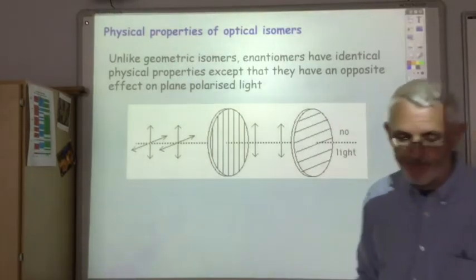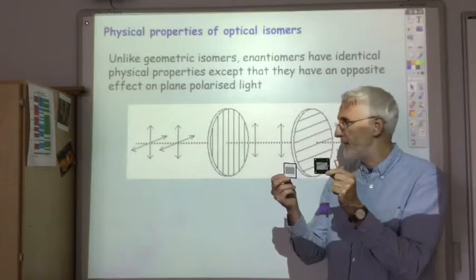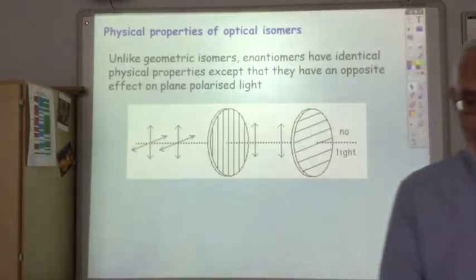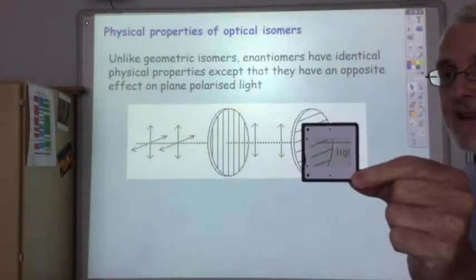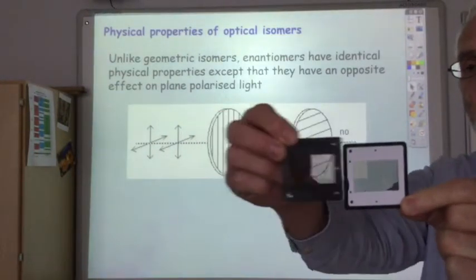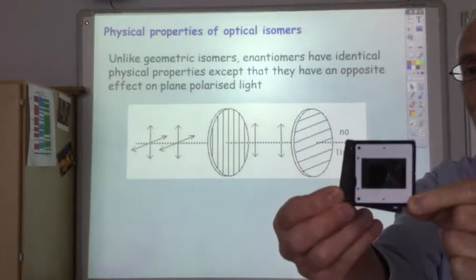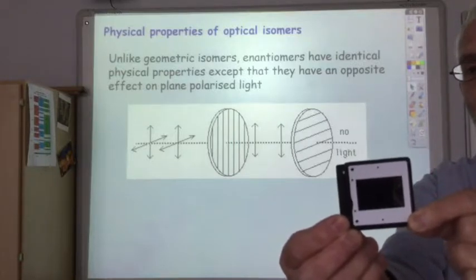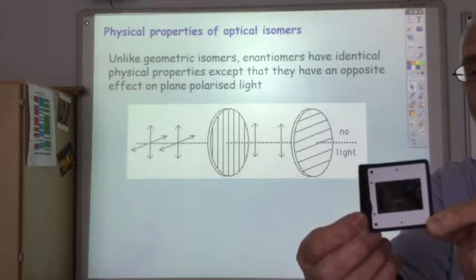I'm going to try and demonstrate that. I've got here two polarizers — pieces of polaroid film. So if I hold this one up, you'll see that it decreases the intensity of the light. If I hold the other one up in the same orientation as the first one, it has no effect. But as I rotate it around, it gradually blocks out all the light, because I'm cutting out both the vertical with the first one and then all the horizontal with the second polarizer, and all the light is cut out.